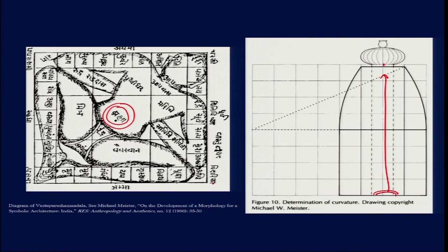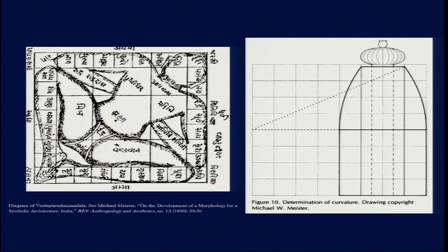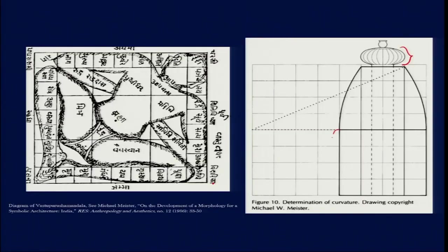The axis mundi concept was also present in Buddhist stupas — those three umbrellas at the top suggest the axis mundi relating to the relic of Buddha. Here, we find a symbolic axis mundi relating to the image of the deity, connecting to the shikara or apex of the temple structure. The only tangible material part of this axis mundi is the corbelled stone placed on top of the shikara.